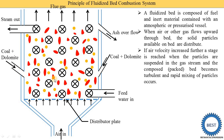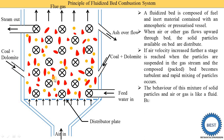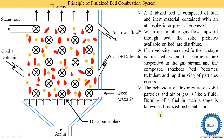You already know about Reynolds number and turbulent flow — their flow is turbulent. The behavior of this mixture of solid particles and air or gas is like a fluid. These coal and dolomites mixed with air behave like a fluid. Fluid means either liquid or gas — here there is no liquid, so we consider it behaves like a gas. And burning of fuel in such a state is known as fluidized bed combustion. That is why its name is fluidized bed combustion — because the coal, dolomite, air, and gas together make one type of fluid, meaning they form a gas. That is why it is called the fluidized bed combustion system.